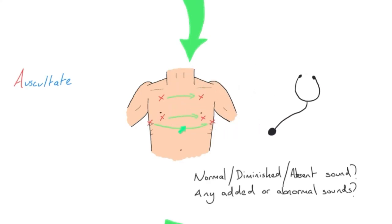We're also listening for any added or abnormal sounds. This isn't a medical chest auscultation, so we're not listening for wheezes, crackles, and the like. However, in blast lung for example, you might hear fluid on the lung. We're just noting that there are added or abnormal breath sounds, since we're not treating asthmas or similar conditions at this stage.